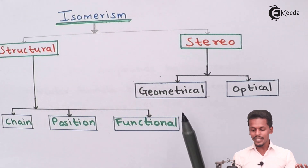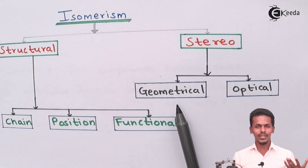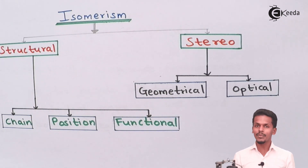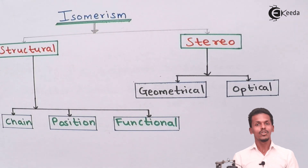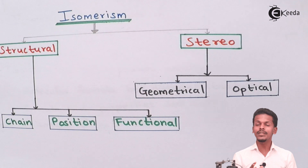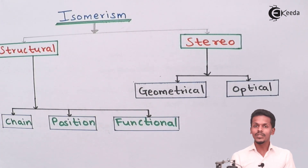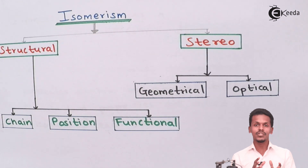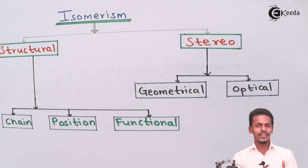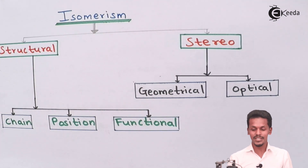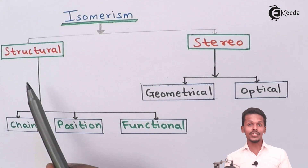Geometrical isomers are basically known as cis-trans isomers — a very common example we are going to see. Optical isomers are a type of stereoisomer which have the property of optical activity — that is, the ability to rotate plane polarized light passing through the molecule. Some molecules are said to be dextro molecules and some are said to be levo molecules, even though they have the same molecular formula but different structural formula.